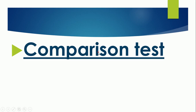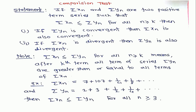In this video I am going to explain how to deal with the comparison test. See the statement of the comparison test: if xn and yn are two positive term series such that series yn dominates series xn for all n greater than or equal to k, then first, if series yn is convergent then series xn is also convergent, and if series xn is divergent then series yn is also divergent.